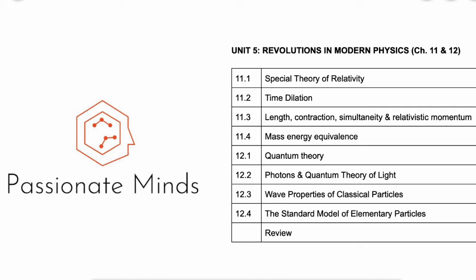The last unit will be revolutions in modern physics, which covers chapter 11 and 12 in the textbook. So chapter 11 is about relativity, so we'll be learning about some theory, and then applying that to problem solving.